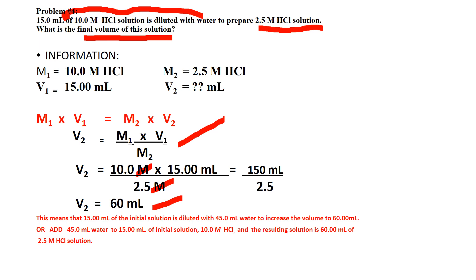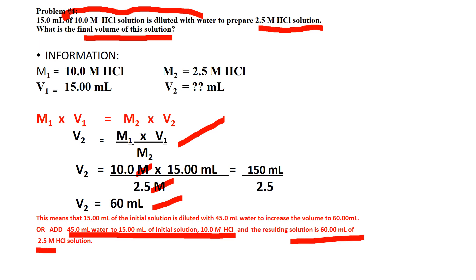If asked how many mL of water was added, simply subtract the initial volume: 60 mL minus 15 mL equals 45 mL. So add 45 mL of water to 15 mL of 10 molar HCl, and the resulting solution is 60 mL of 2.5 molar HCl.